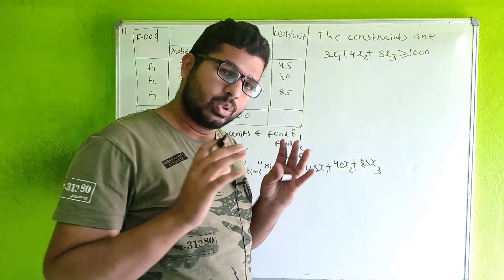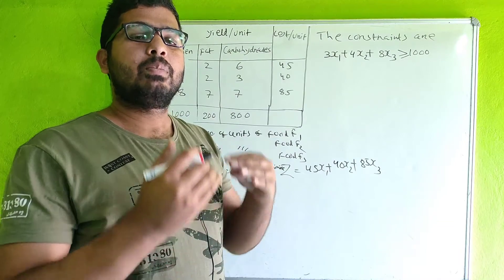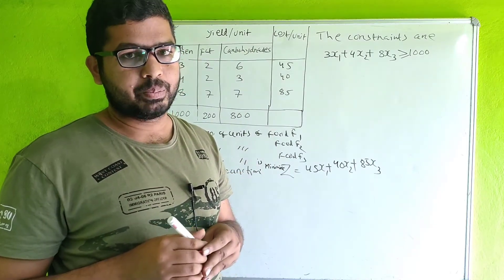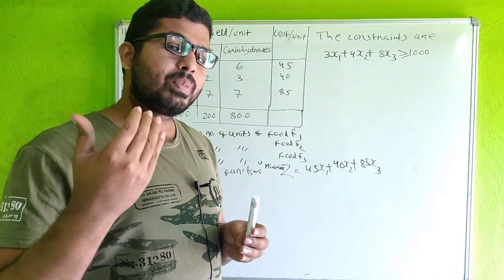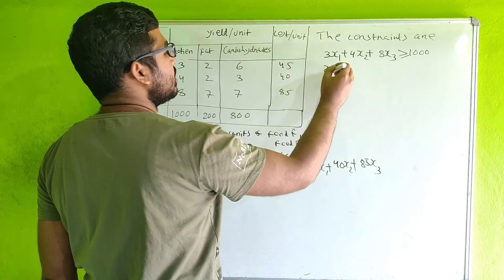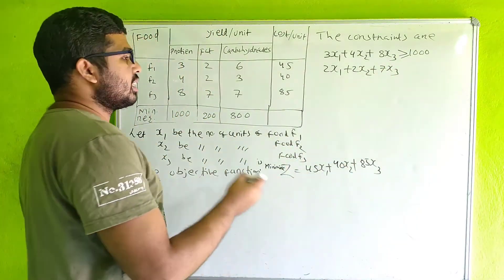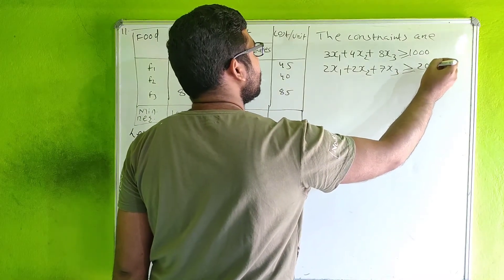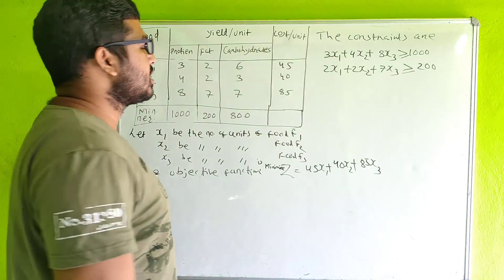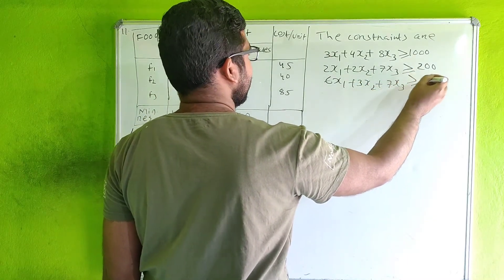The minimum protein requirement means the body must have at least 1,000 units. Minimum means at least and maximum means at most. The total fat constraint is greater than or equal to 800. Carbohydrates can be a minimum of 800 units.